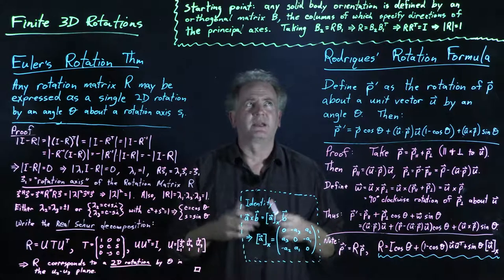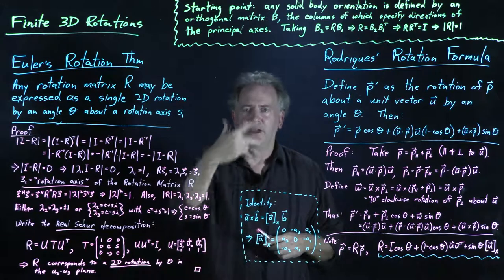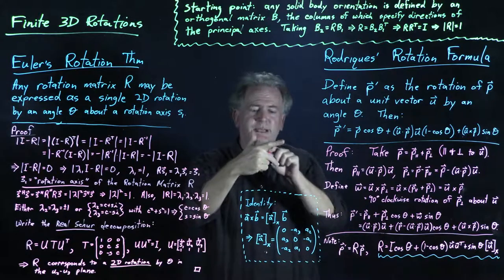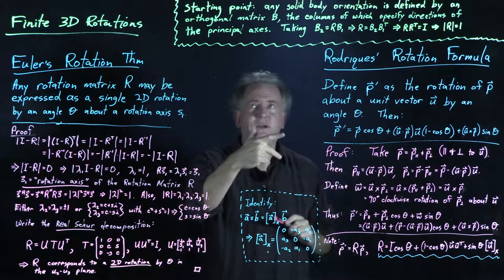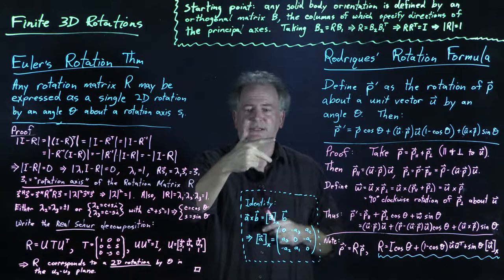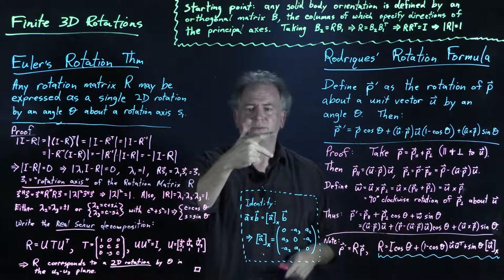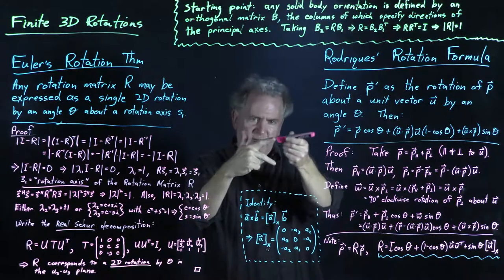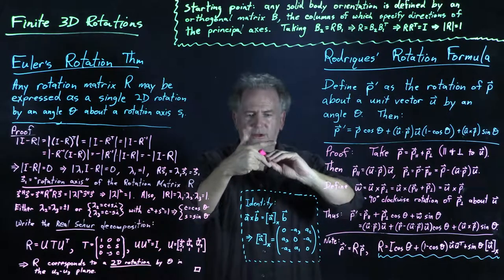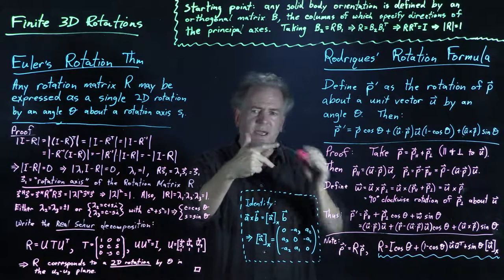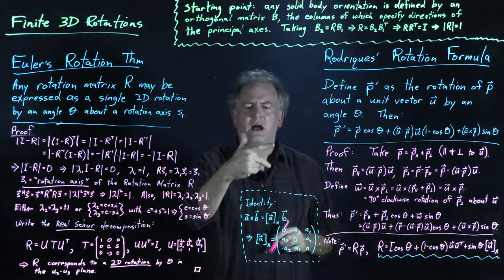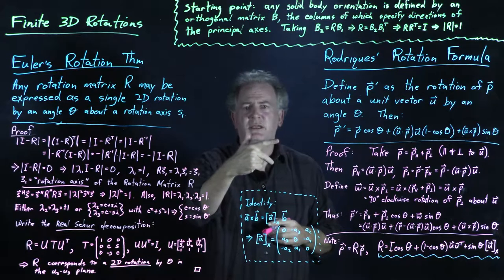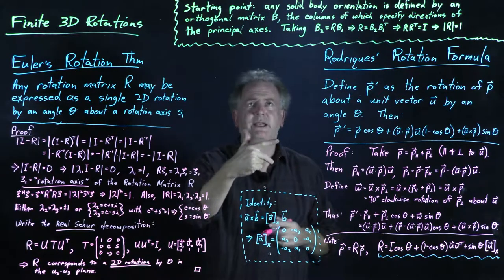As a starting point, any solid body orientation may be defined by an orthogonal matrix B. The columns of this orthogonal matrix B specify the directions of the three principal axes of the solid body in the inertial reference frame. The first column is in some direction, the second column is orthogonal to the first, and the third column is orthogonal to both in a right-handed sense, so the determinant of B equals 1.